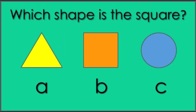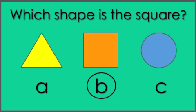Which shape is the square? Is it the A shape, the B shape, or the C shape? What do you think? The B shape is a square. Very good.